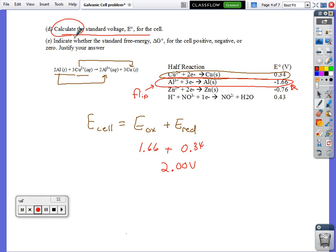Part E asks us to indicate whether the standard free energy, delta G for this cell, is positive, negative, or zero. That's another equation for us. Delta G for any cell equals negative nFE. We don't really have to plug anything into this equation, but we're finding whether delta G is positive, negative, or zero.